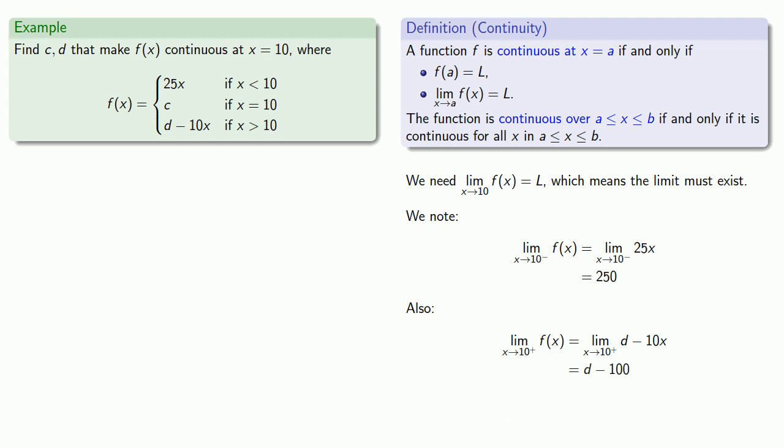And since we want the limit from the left and the limit from the right to be equal, we want 250 to be equal to d minus 100, and so that tells us that d has to be 350.